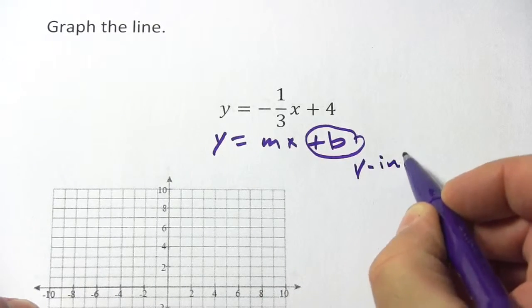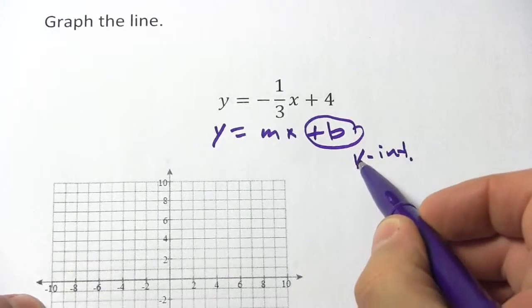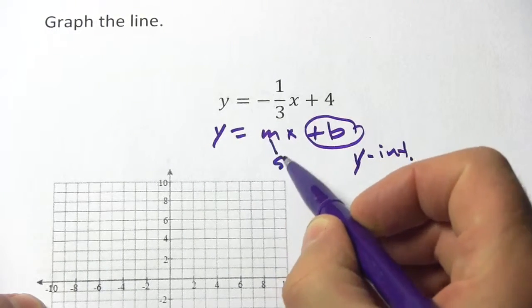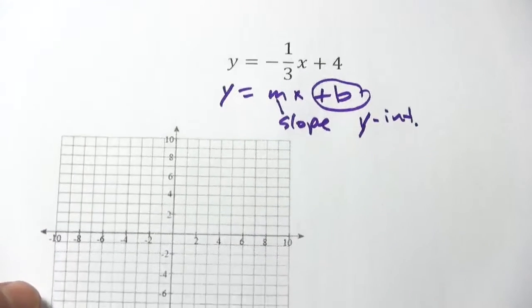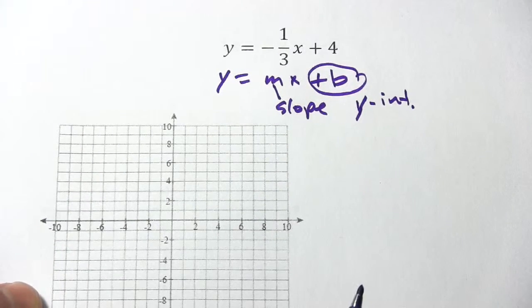The plus b, that's your y-intercept, and the m, that's your slope. So with these two things it's pretty simple to graph the line.